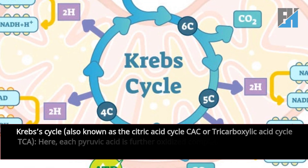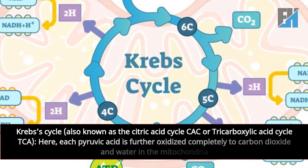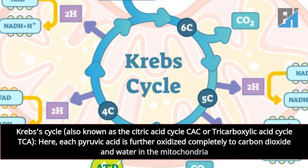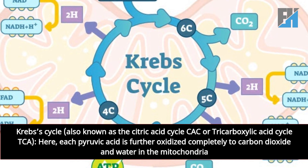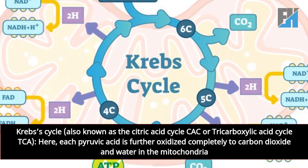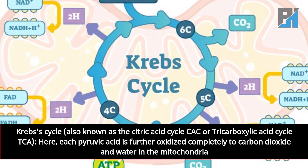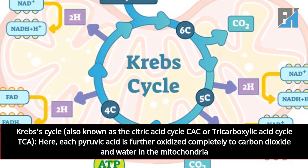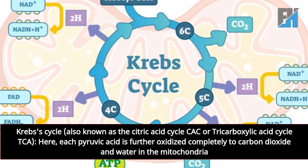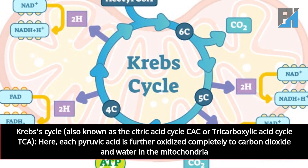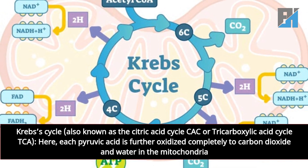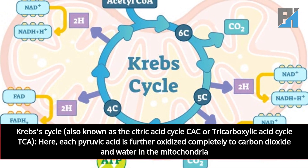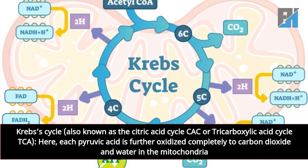The second stage is the Krebs' cycle, also known as the citric acid cycle (CAC) or tricarboxylic acid cycle (TCA). Here, each pyruvic acid is further oxidized completely to carbon dioxide and water in the mitochondria.